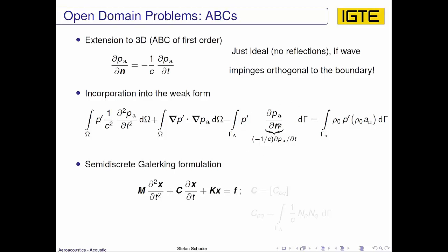Then we obtain a semi-discrete Galerkin form where we have some additional damping term due to the boundaries. And this damping coefficient matrix is a simple integral over the ABC boundary, and this is more or less how it works.